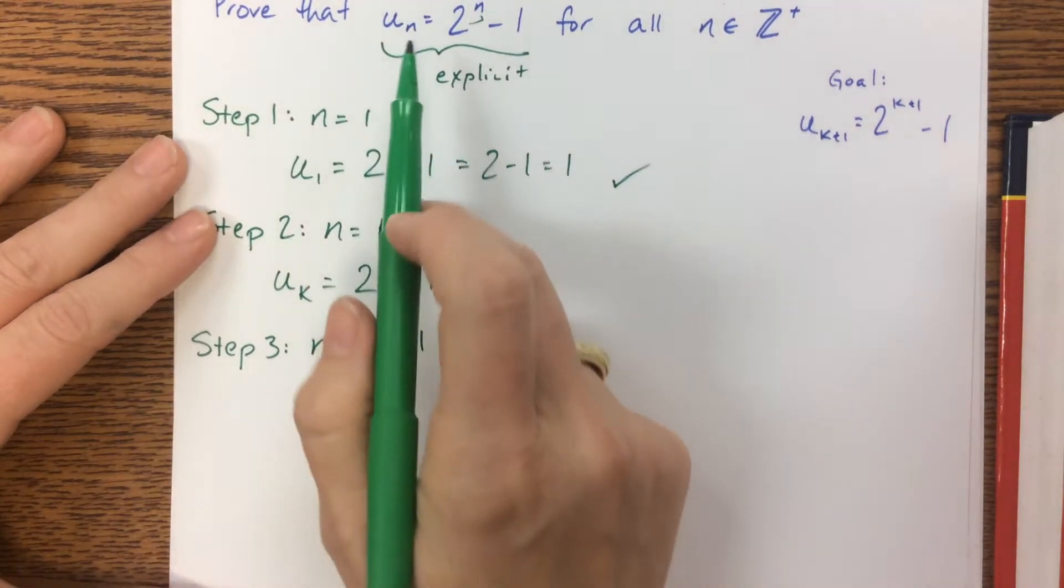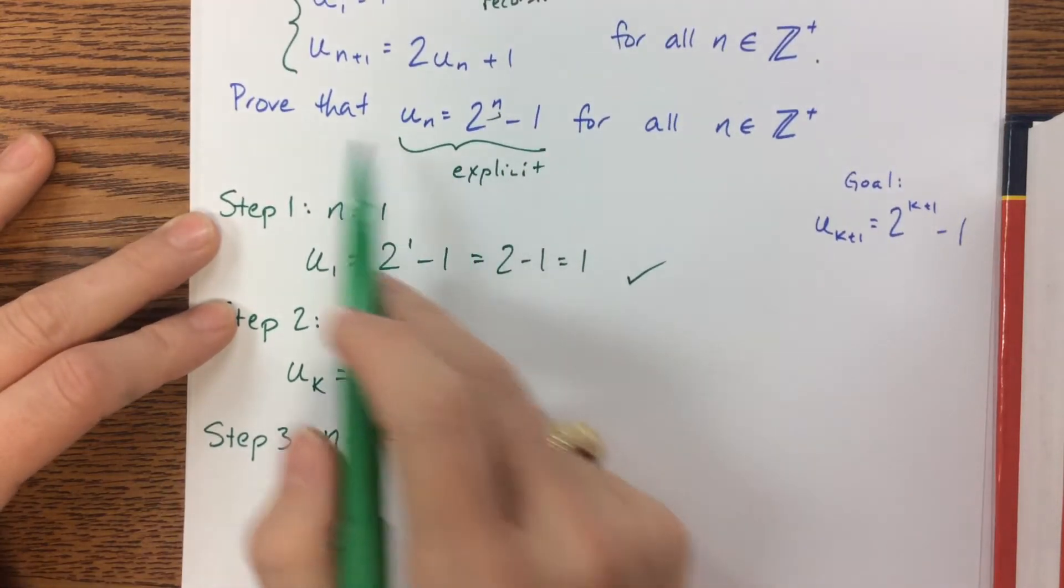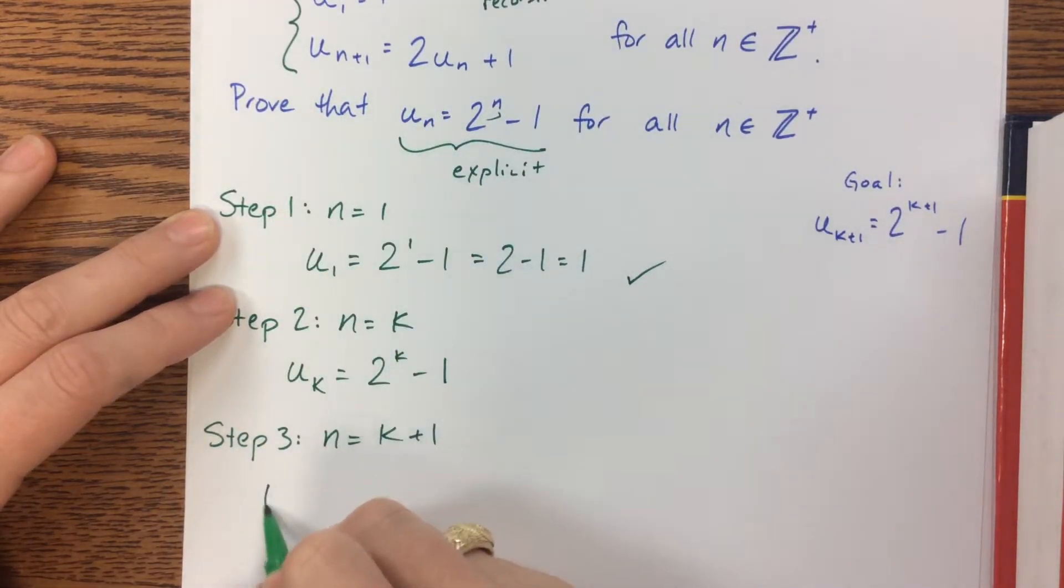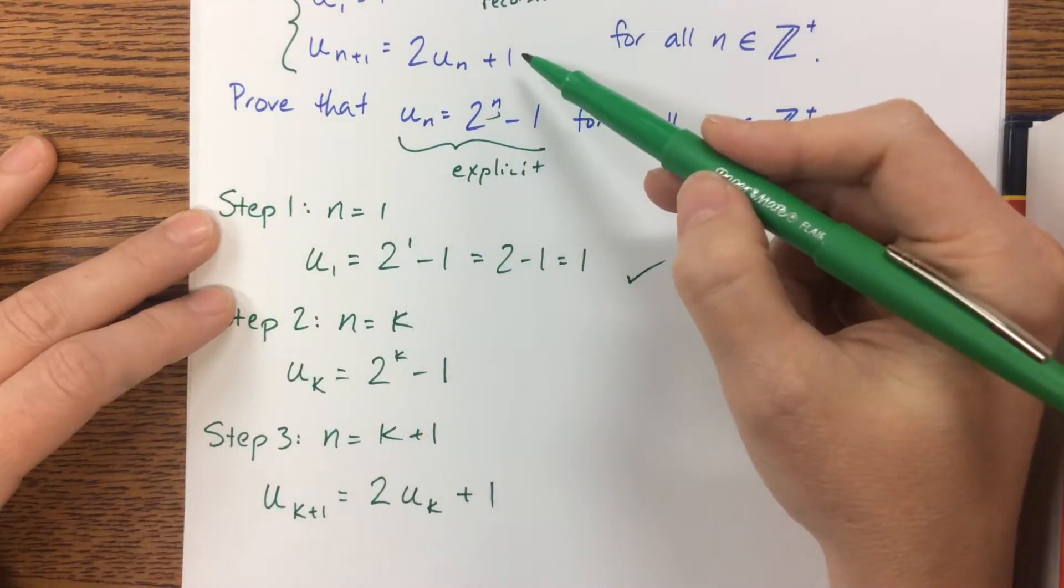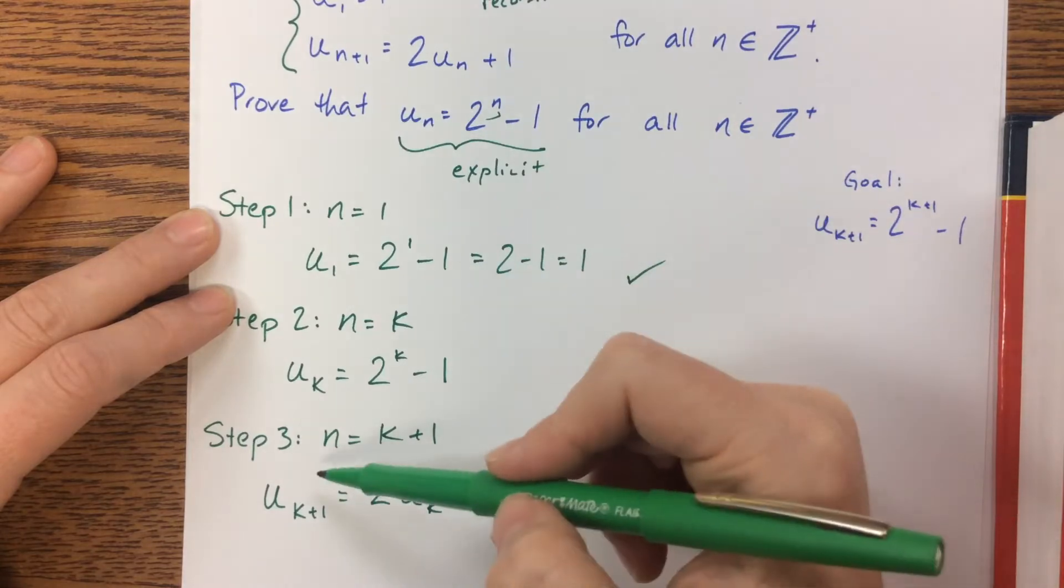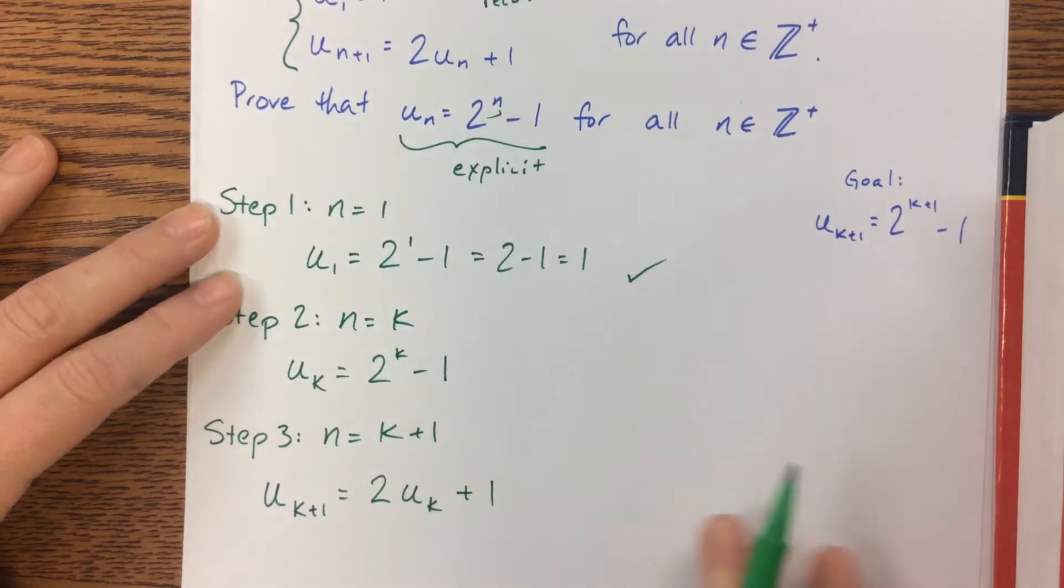So coming back here, we said that u_(k+1) = 2u_k + 1. All I'm doing is taking this recursive part right here and plugging in k.